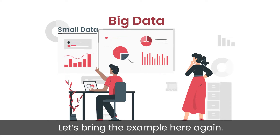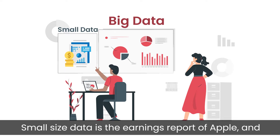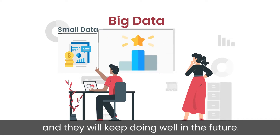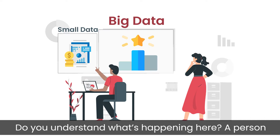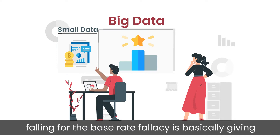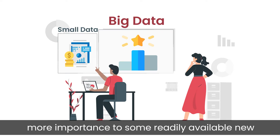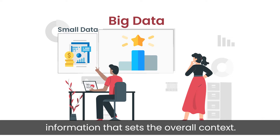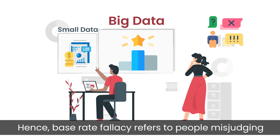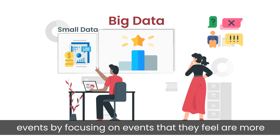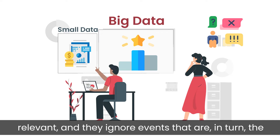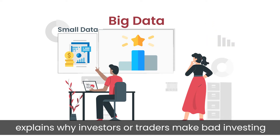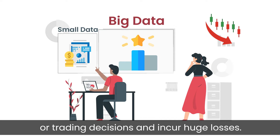Let's bring the example here again. The small-size data is the earnings report of Apple, and the large set of data — or the base rate — is the fact that Apple is the most innovative company in the world and will keep doing well in the future. A person falling for the base rate fallacy is basically giving more importance to some readily available new piece of information, but disregarding the past information that sets the overall context. Hence, Base Rate Fallacy refers to people misjudging events by focusing on events they feel are more relevant while ignoring events that are in turn the most relevant. All of this results in an error of judgment, which explains why investors or traders make bad investing or trading decisions and incur huge losses.